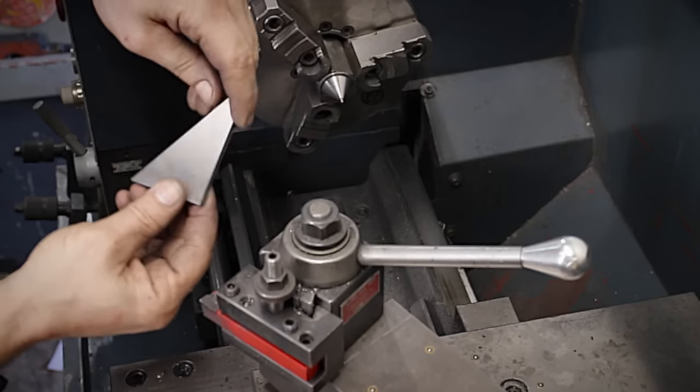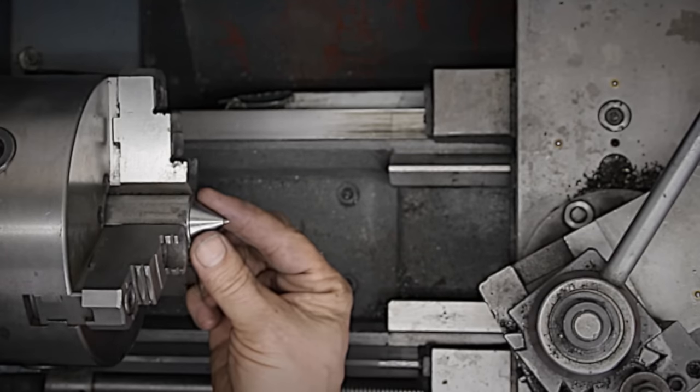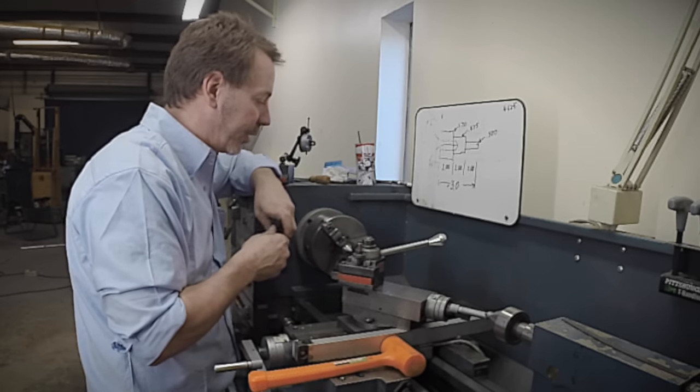We're going to start out with an angle block here. This one here is at 30 degrees because I need an included angle of 60 for this particular end. I'm trying to set up something for live centers.